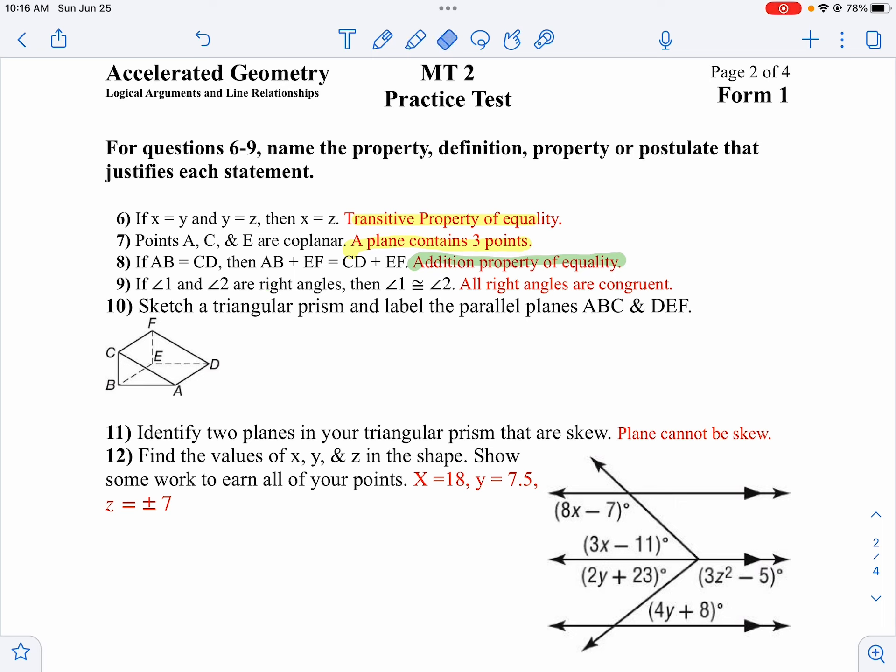On the next one, we're told angle 1 and angle 2 are right angles, therefore angle 1 and angle 2 are congruent. The reason is we know all right angles are congruent.